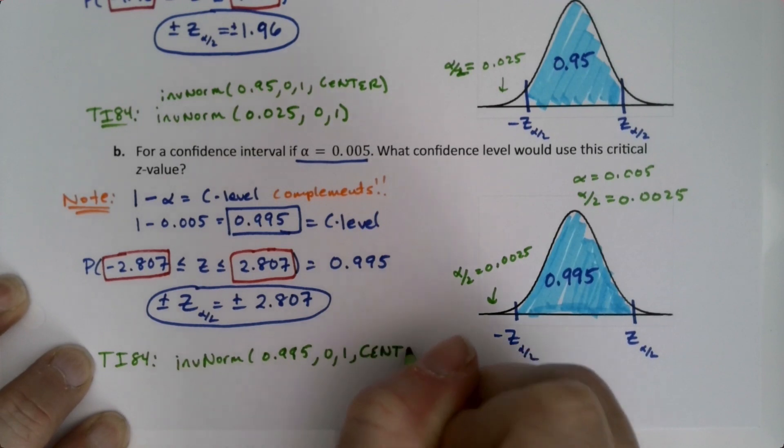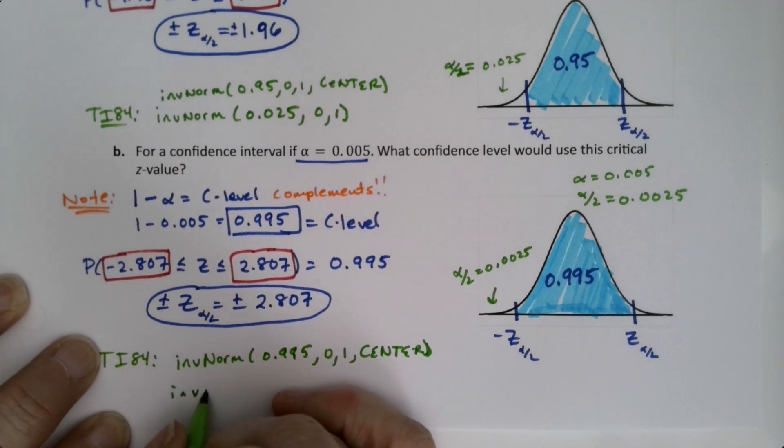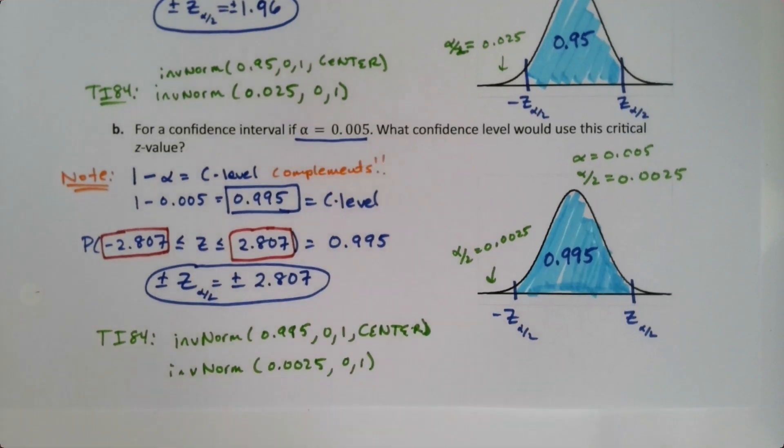If you have a new calculator, if you have an old calculator, it would be 0.0025, 0, 0, 1, right? You have to use the alpha over 2. So, if you're using the TI-84, write whichever one of those works for you. Again, I think StatCrunch is easier than both of these, but that's just me personally.